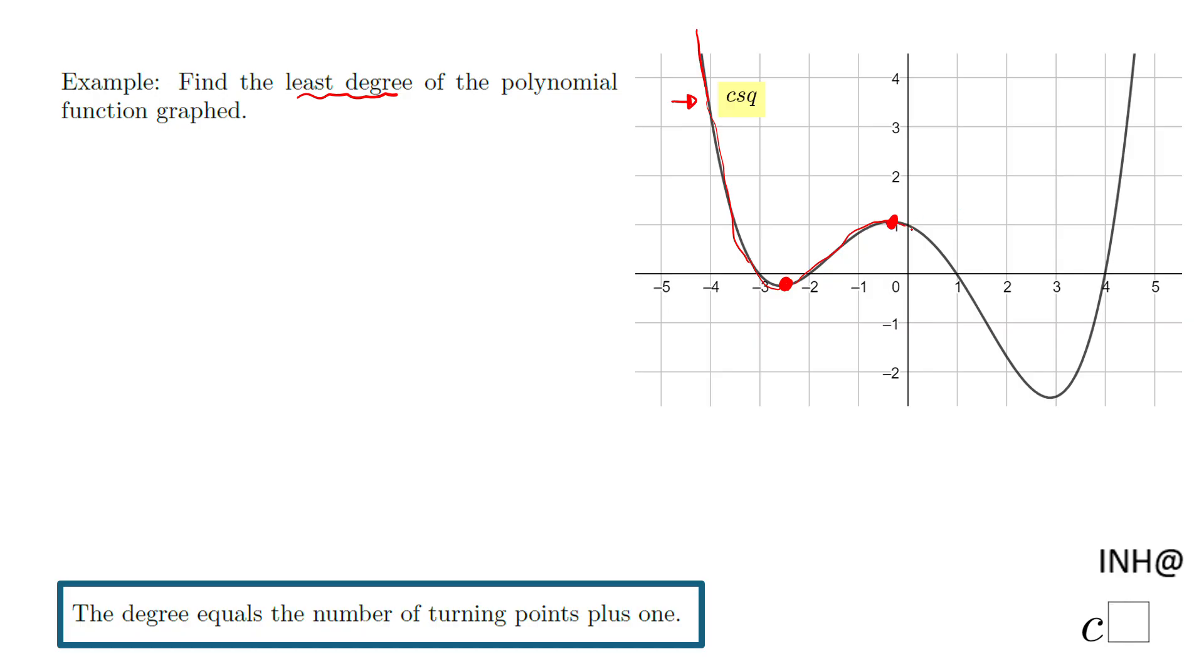Do we have another one? Obviously, you already notice we're decreasing here, and then here is the moment where the function is increasing again, goes forever. So how many turning points do we have in this polynomial function, in this graph? We have three turning points.